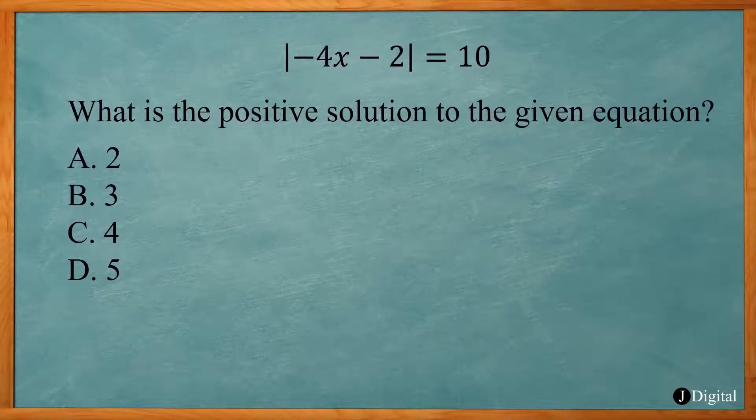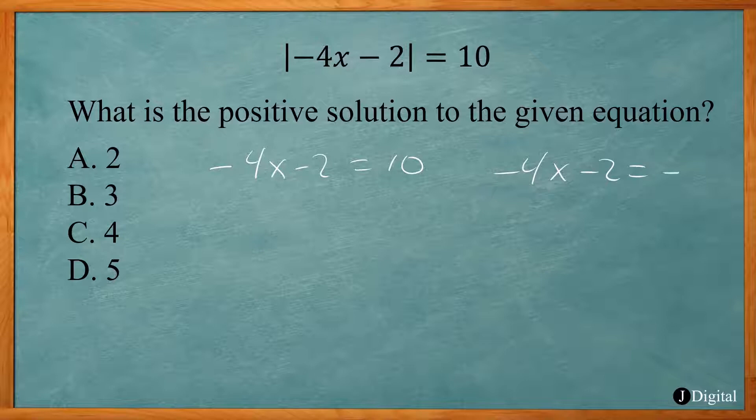This is an example SAT problem. It says the absolute value of negative 4x minus 2 equals 10. What is the positive solution to the given equation? So how do you work this out? You set up two equations. You have negative 4x minus 2 equals 10, and a second equation where you have negative 4x minus 2 equals negative 10. Basically, what's inside the absolute value can equal 10 or negative 10 to give you the result of 10.